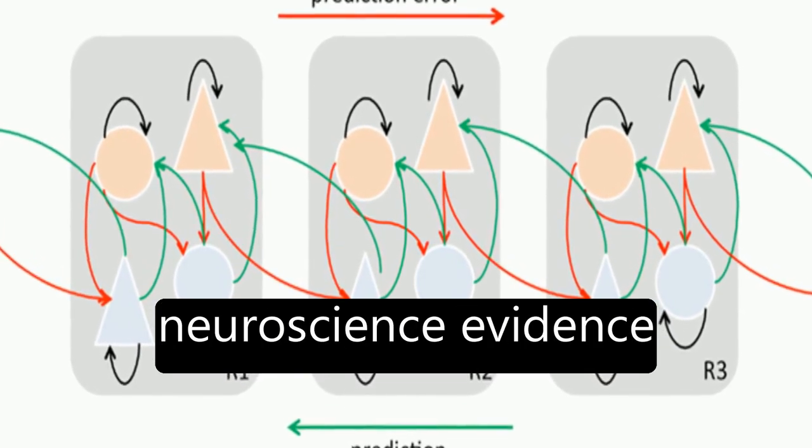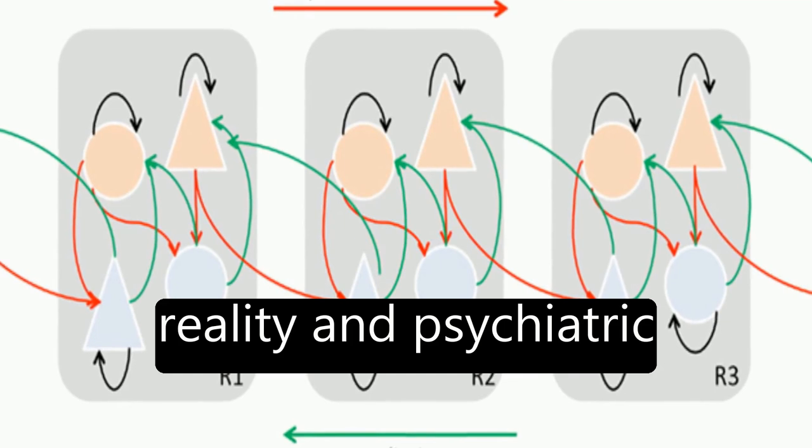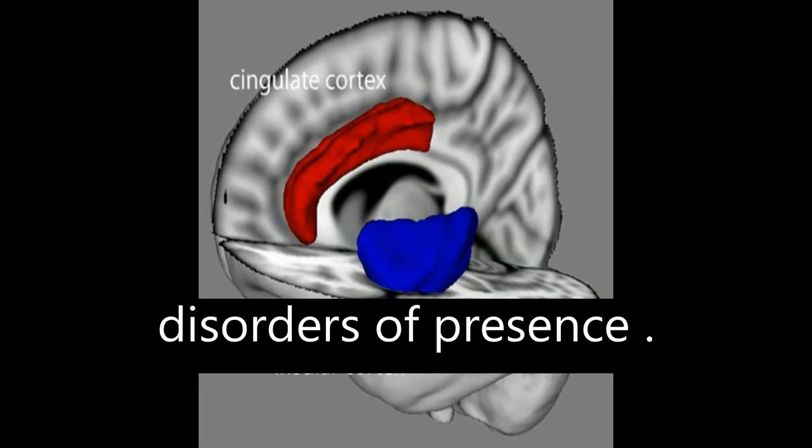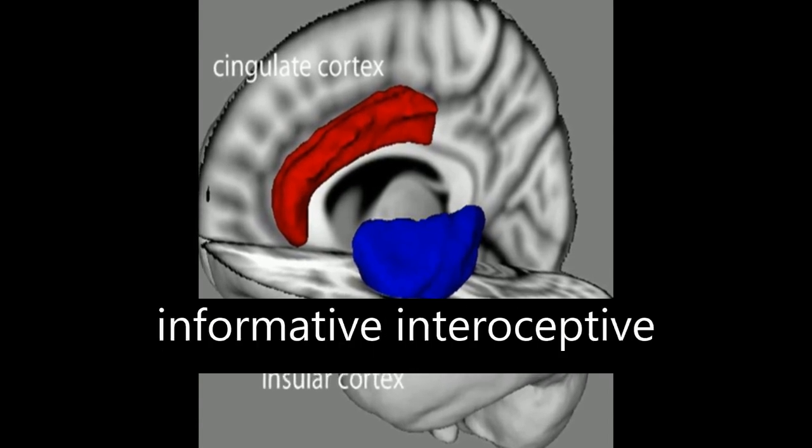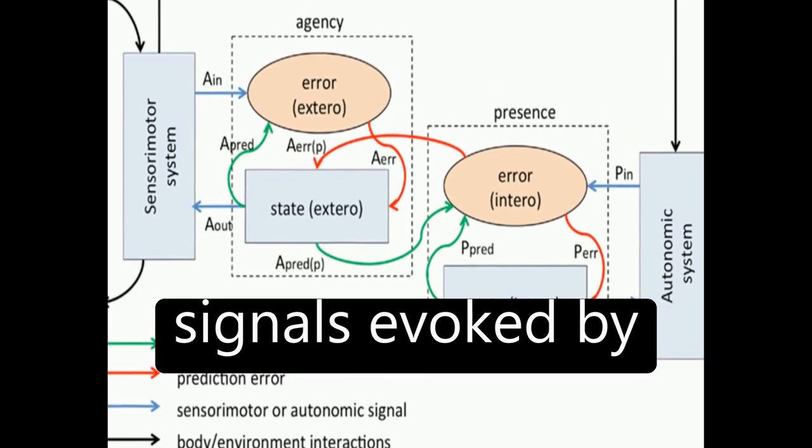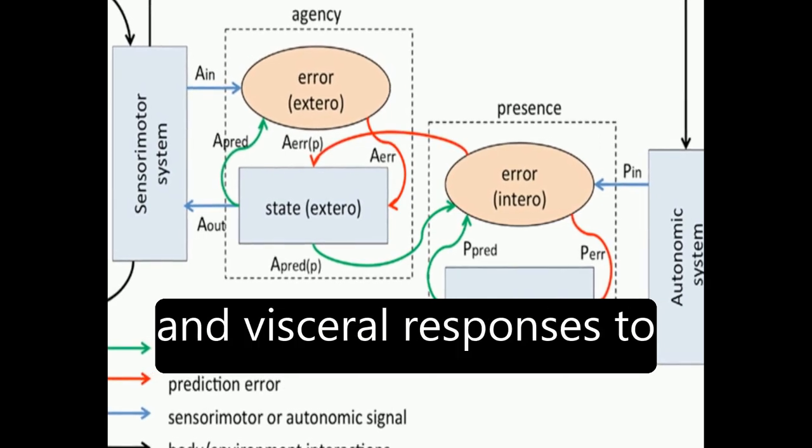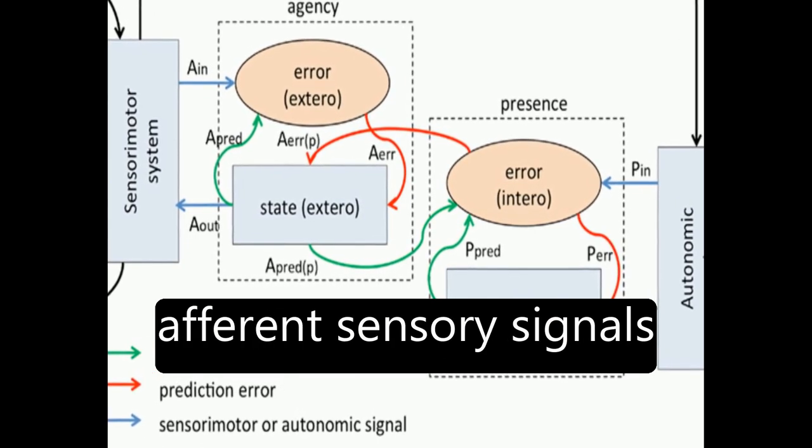And cognitive neuroscience evidence from studies of virtual reality and psychiatric disorders of presence. The model associates presence with successful top-down predictions of informative interoceptive signals evoked by autonomic control signals and visceral responses to afferent sensory signals.